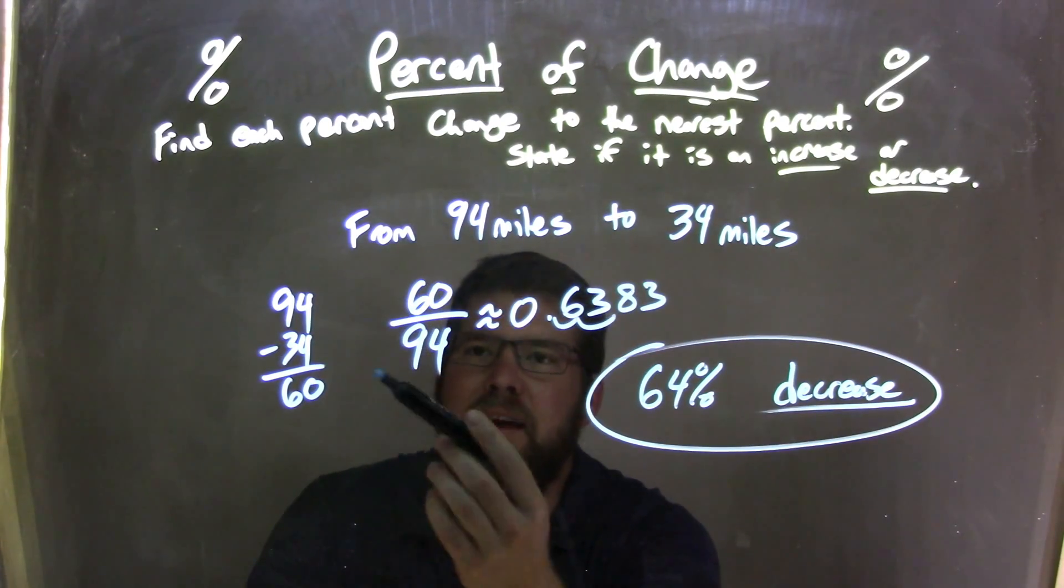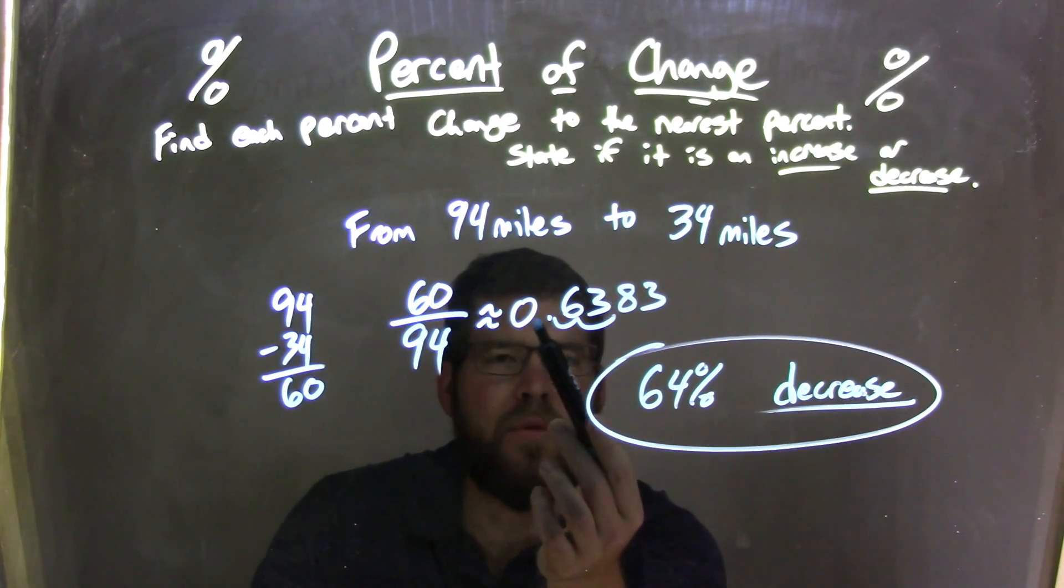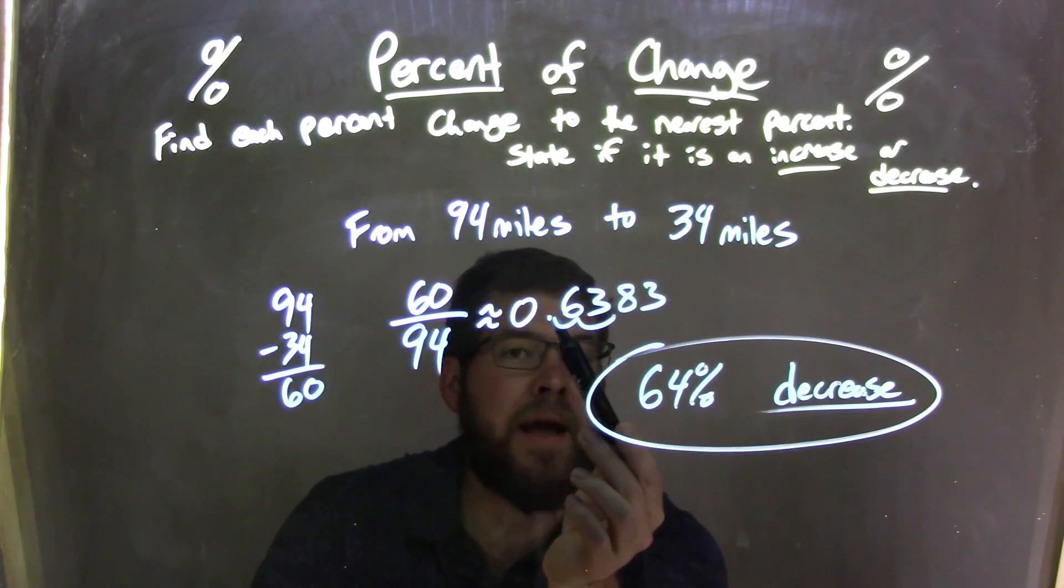I want to keep that positive. We have 60. We then divide 60 by our first number, which was 94, which came out to approximately 0.6383. We then had to convert that to a percent.